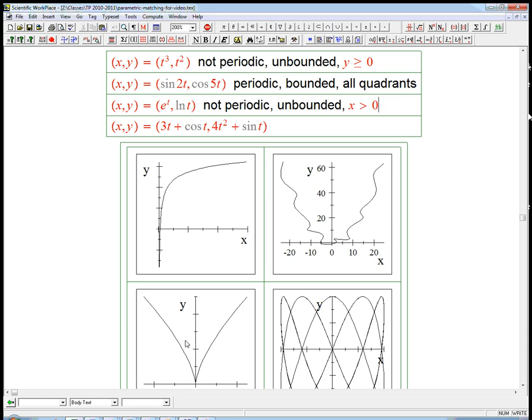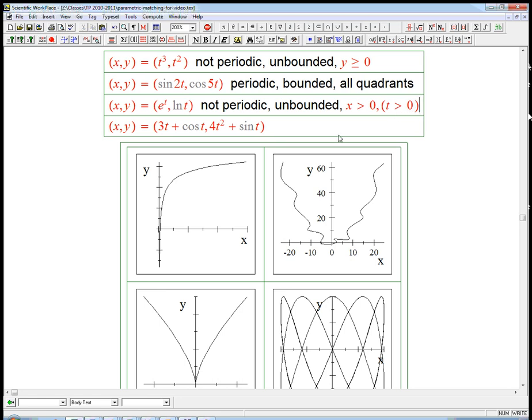I haven't labeled any t values on any of these curves, so that's not going to help us. But we might as well observe that this is the one where, even if I wanted to, I couldn't possibly put in a 0 or negative value of t. But I'll put that in parentheses because it's not going to really affect the shape of the curve as drawn.